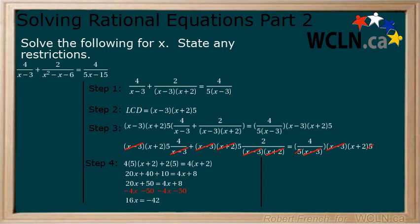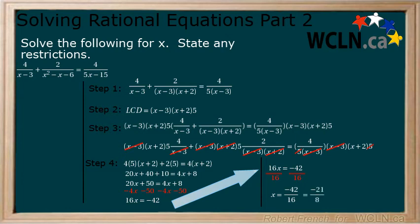Add 50 to both sides and subtract 4x from both sides. Finally, divide both sides by 16. We can reduce negative 42 over 16 to negative 21 over 8.